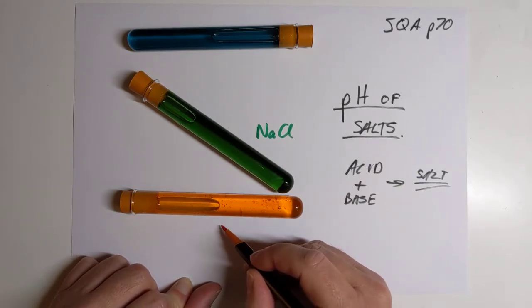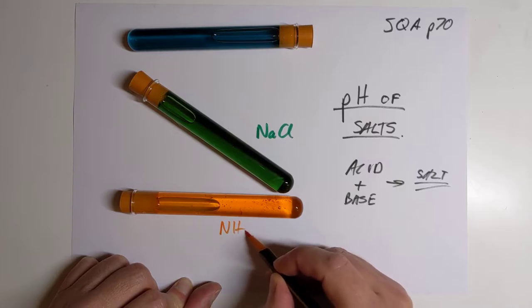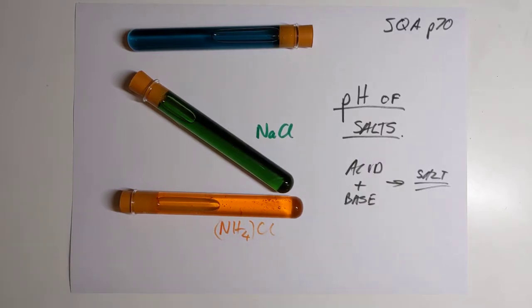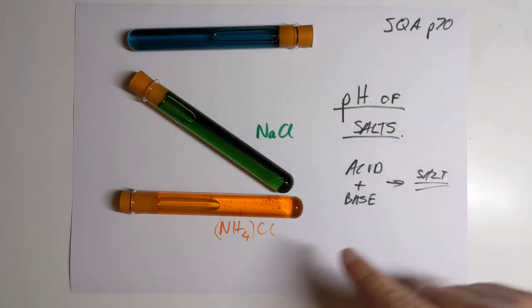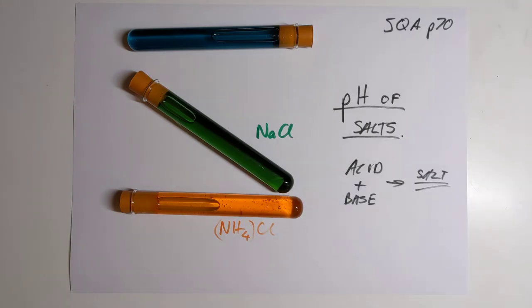This here is ammonium chloride. So NH4Cl at a pH of round about 5-ish. You never normally see the pH of 5, it normally tends to click straight down to red,